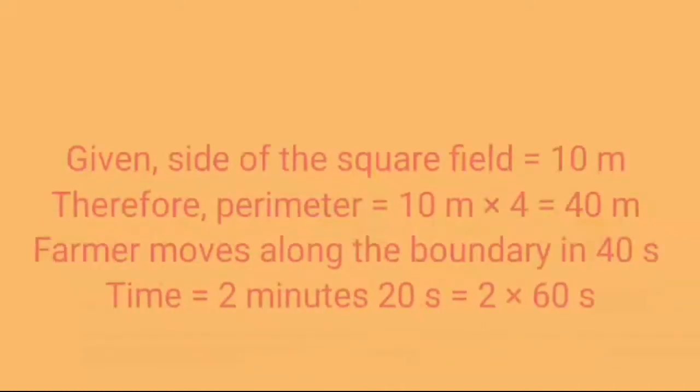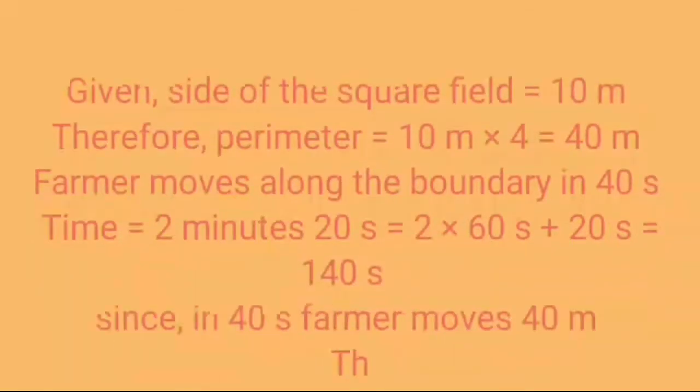Farmer moves along the boundary in 40 seconds. So time will equal to 2 minute 20 seconds will equal to 140 seconds.